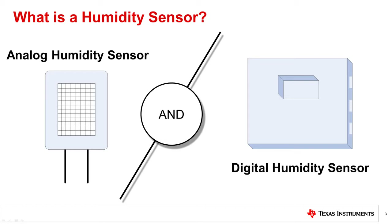Another major issue the digital humidity sensor resolves is the package opening size needed to measure moisture in the air. The package opening allows the polyimide to react with the moisture in the air, and the amount of moisture absorbed is then translated into a resistance, voltage, or digital output. With advancements in digital humidity sensor technology, the polyimide area is reduced and provides a much smaller surface area while having greater accuracy. This allows a digital relative humidity sensor to drift less at high temperatures and humidity levels than an analog humidity sensor.